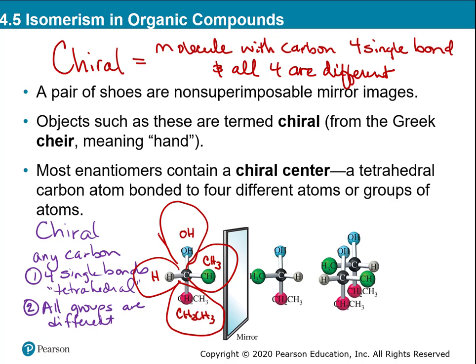When I make the mirror image of this molecule, I cannot match up the four groups. The OH and the larger groups match up, but the green and the gray are swapped. These are not exactly the same molecules — they are called non-superimposable mirror images. That's what enantiomers are.